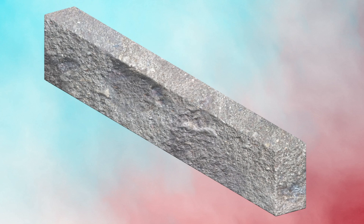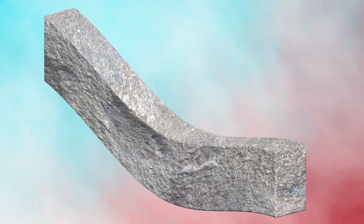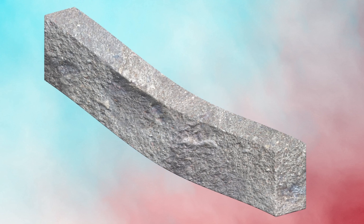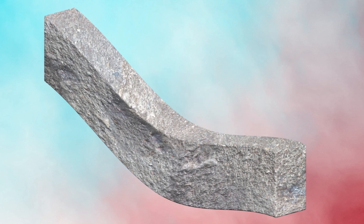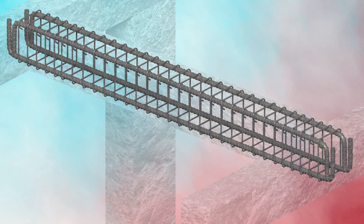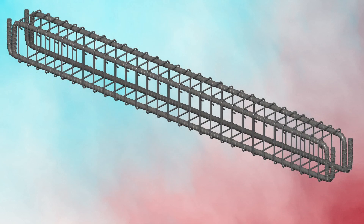Before proceeding, it's important to understand that a beam is a flexural member — that is, it's designed to resist bending. While bending, there are tension and compression zones generated within the beam. Although concrete has great strength in compression, it has very low tensile strength of 0.7√fck. Hence, to impart tensile strength, we reinforce concrete with steel rebar.